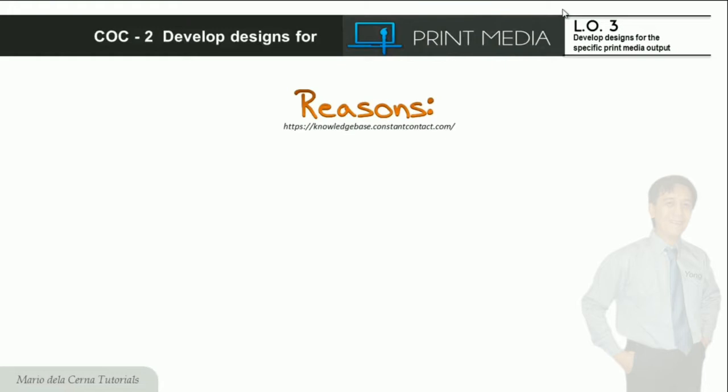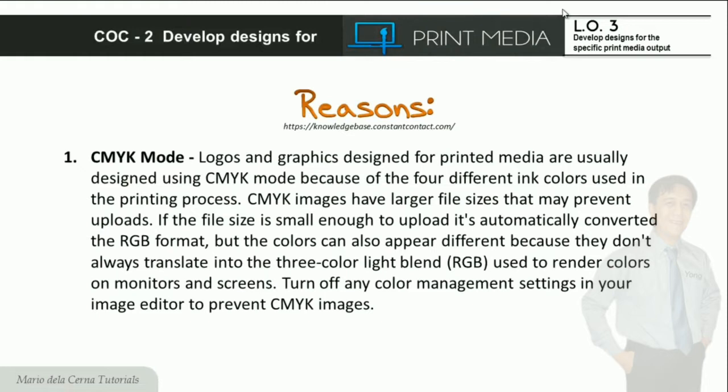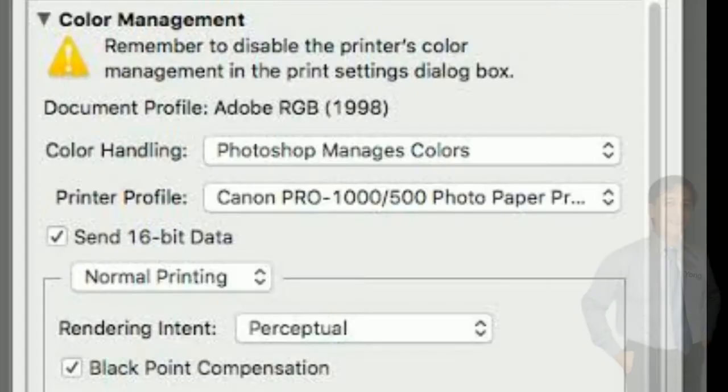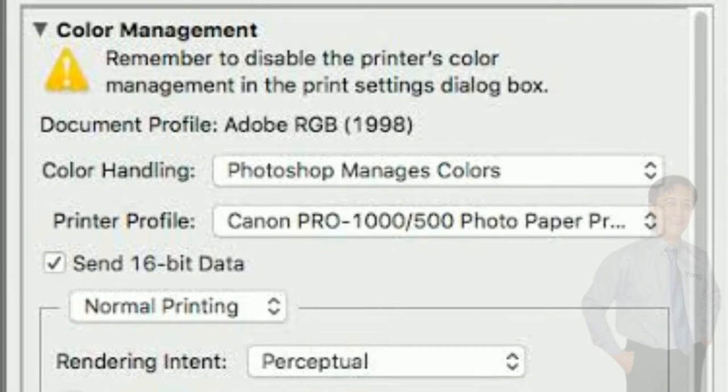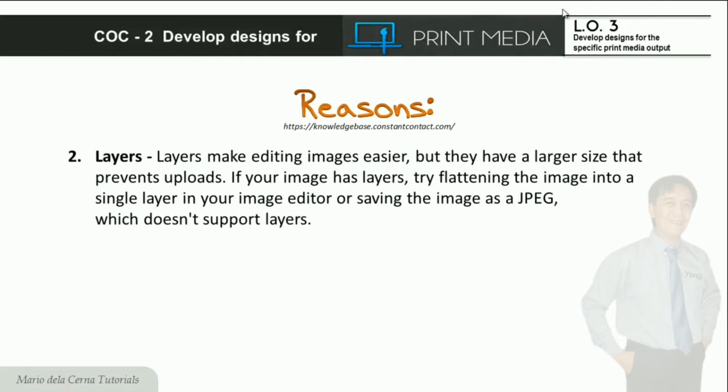Isa sa mga dahilan ay ang CMYK mode. Kalimitan sa mga graphic design ay naka-CMYK mode para sa pag-print ng apat na kulay, ngunit ito ay may malalaking file sizes kaya pinipigilan itong i-upload. Pwede itong i-convert sa RGB format, ngunit nagbabago ang kulay sa monitor at screens. Upang ma-resolve ito, i-turn off ang color management settings sa inyong image editor software.